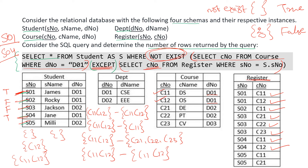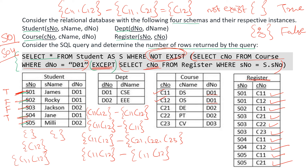Moving on to the last student S05 Millie. We have C11, C12 minus the corresponding course numbers for S05, which are C11 and C21. Taking the difference gives us C12. That is non-empty, so false is returned and this student will not be included.